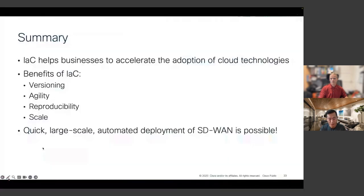In summary, we highlighted the benefits and use cases for IaC. It helps companies accelerate cloud adoption and provides versioning, agility, reproducibility, and enables large-scale deployments. The code is available on our DevNet repository and you can modify it for your environment. We've seen customers using it to deploy hundreds of branch sites.